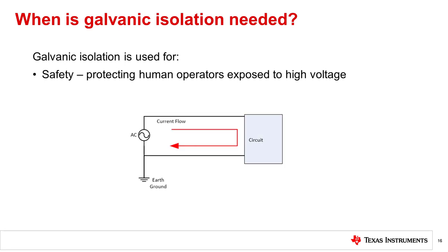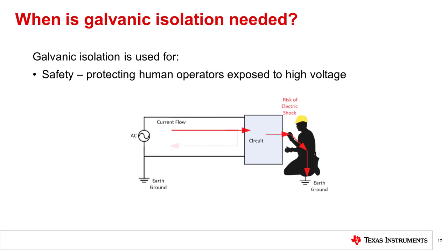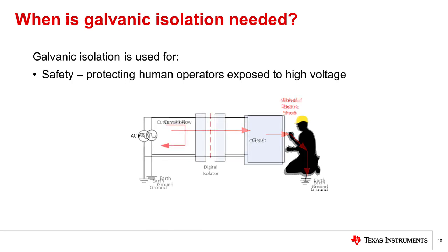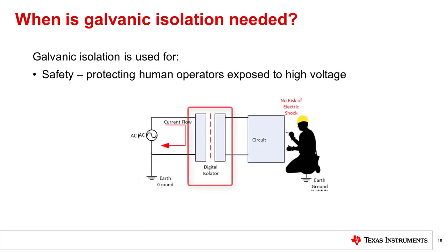First, galvanic isolation is used for safety. Isolation prevents current from flowing from high voltage potential elements to ground through a person's body. Environments where human operators are present and equipment operates under high voltage or is exposed to high voltage, including the risk of a potential lightning strike, requires galvanic protection. By galvanically isolating circuits, operators and other circuitry are protected from potentially lethal or damaging current flow.